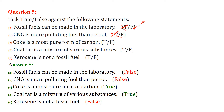Coke is an almost pure form of carbon — this is true. Coal tar is a mixture of various substances — this is also true. Kerosene is not a fossil fuel — this is false; kerosene is a fossil fuel.